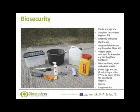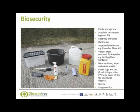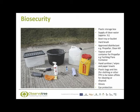This illustrates what a comprehensive biosecurity kit would look like. You should have a tough plastic storage box and a supply of clean water, which is approximately 5 litres. You would need a boot tray or bucket in which you could wash your boots, a hard brush to do the scrubbing, and an approved disinfectant such as Propeller or Clean Kill to use after you had washed your boots. Propeller should be stored in a vapour proof container such as a yachting flare container. You should also have hand sanitiser, wipes, paper towels, plastic bags and ties to contain clothing or other personal protective equipment which had to be taken off site for cleaning or disposal. You should also have a pair of gloves and eye protection.